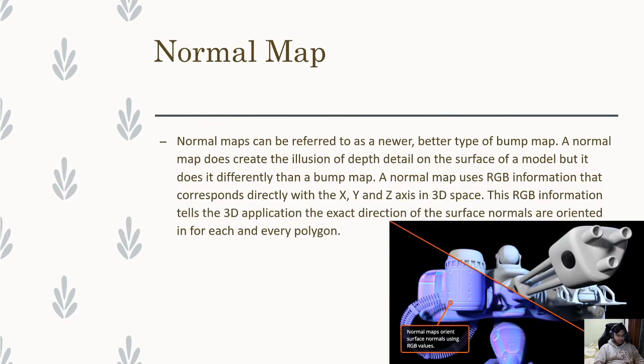Finally this isn't PBR but it's essentially, a normal map is integral to texturing. Normal maps can be referred as a newer, better type of bump map. A normal map does create the illusion of depth detail on the surface of a model but it does it differently than a bump map.